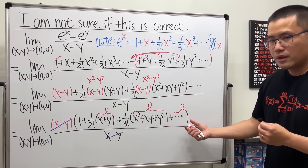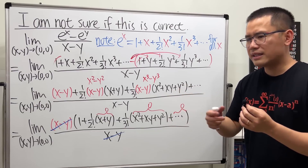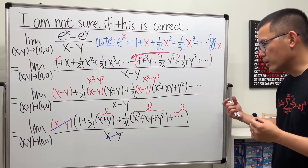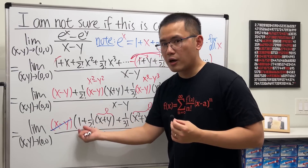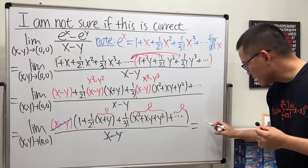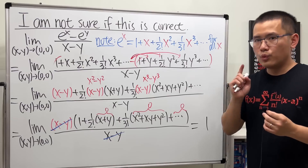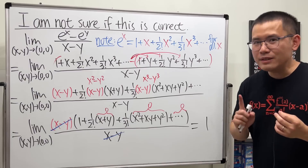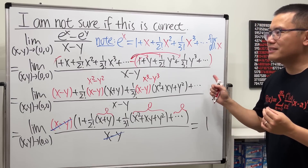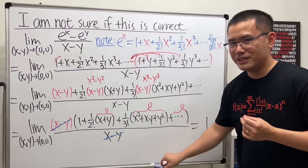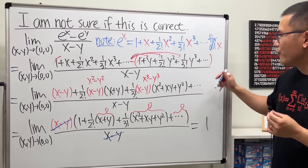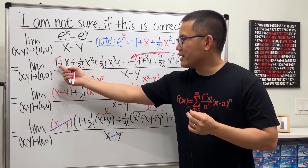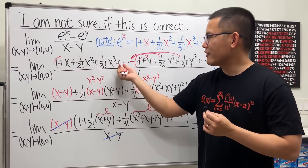In fact, after factoring each remaining group, you always get x to some power, xy terms, or y to some power — so plugging in (0, 0) always gives zero. We're left with just the constant term, which is 1. So it looks like the answer is equal to 1, and I'm pretty sure that's the answer. But what I'm not sure about is this step: can we really go from the infinite series to factoring out (x minus y) term by term?